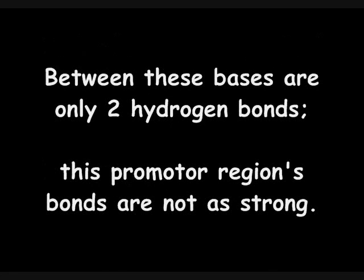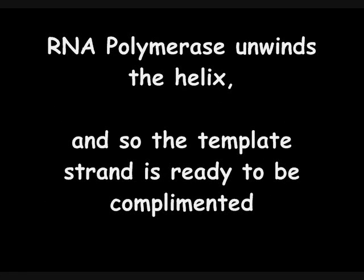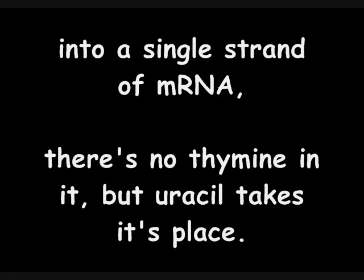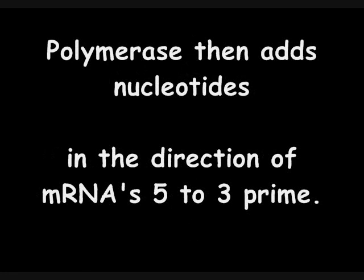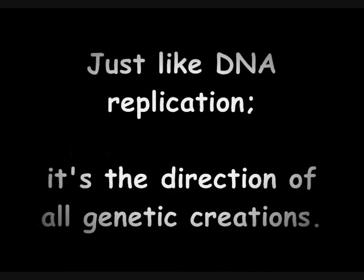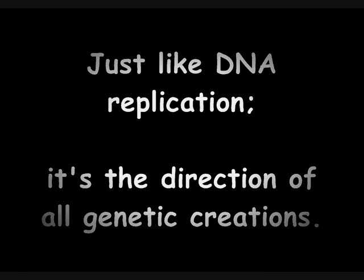Between these bases are only two hydrogen bonds, and promoter region bonds are not as strong. RNA polymerase unwinds the helix, and so the template strand is ready to be complemented into a single strand of mRNA. There's no thymine in mRNA, but uracil takes its place. Polymerase then adds nucleotides in the direction of five to three prime — just like DNA replication.